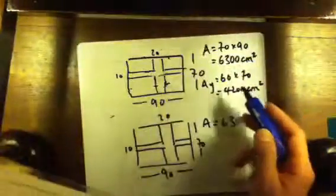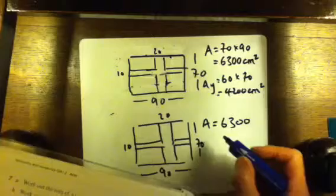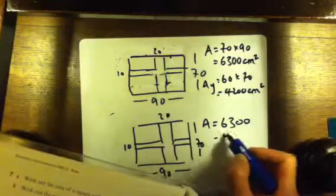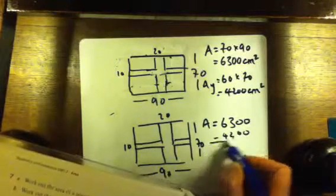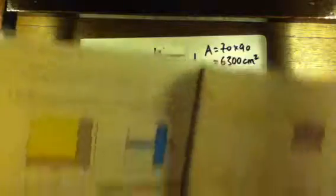So the grey section is equal to the blue section. Because we calculated the area of the yellow section before to be 4200 centimeters squared, we can subtract that from the area to give us the blue region on the second flag.